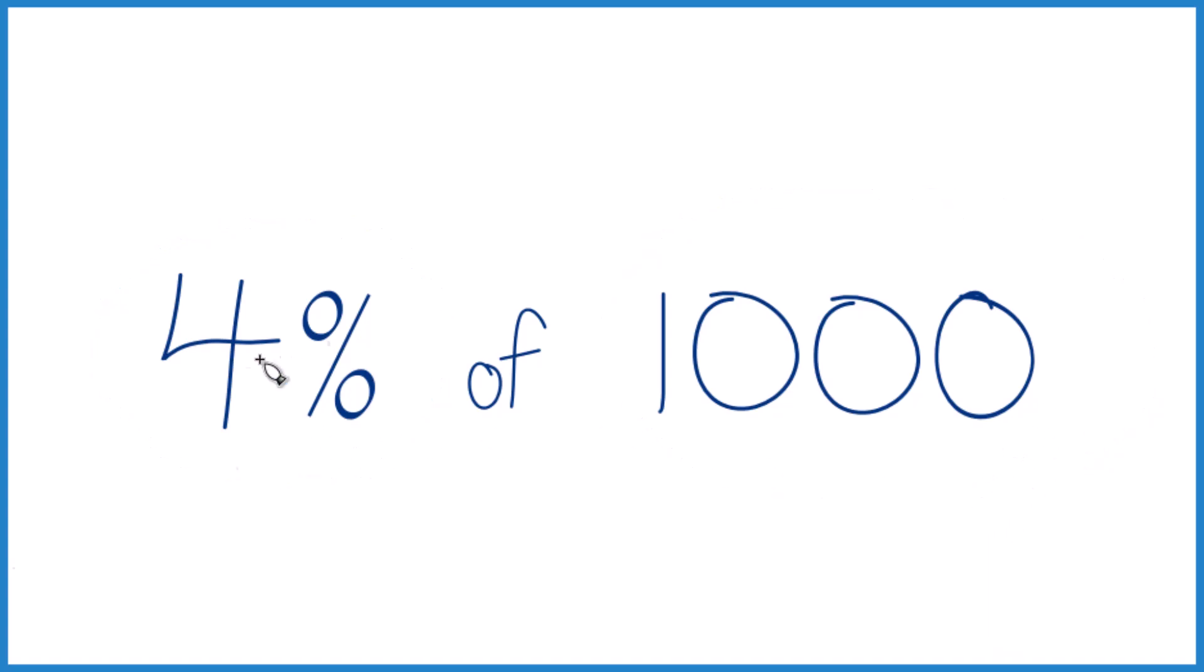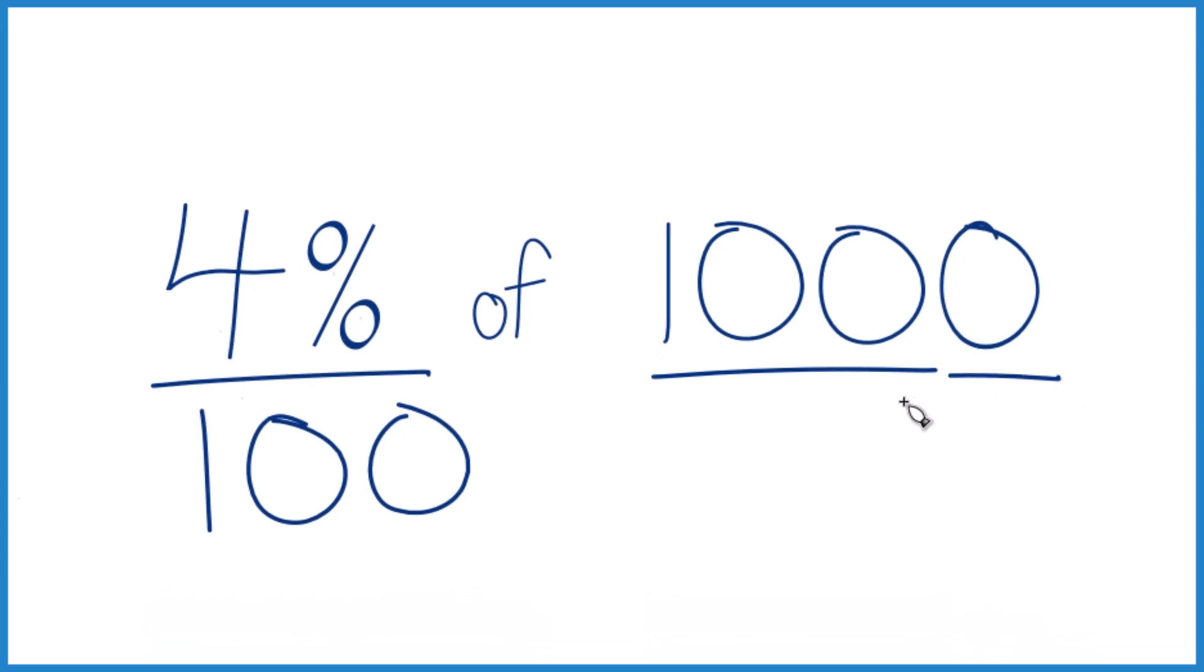So you can think of it this way, 4%, that percent means per 100. So we have 4 per 100. So 4 per 100 would be 4. We have another place there. So we have 4 per 1,000 would be 40.